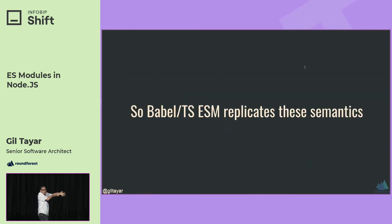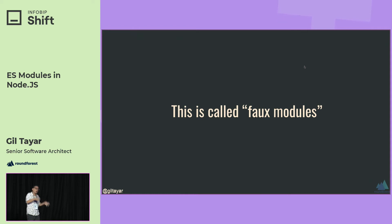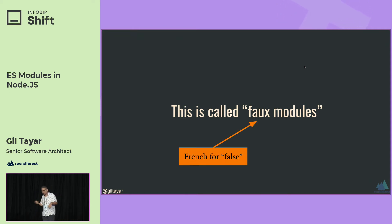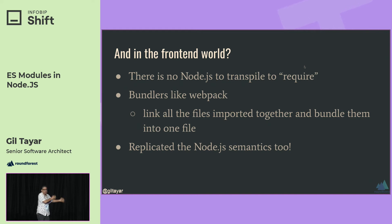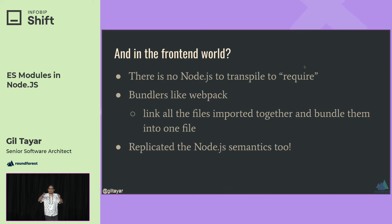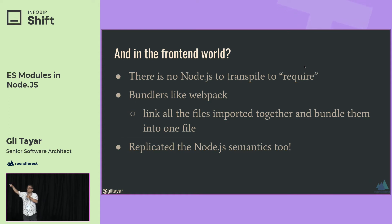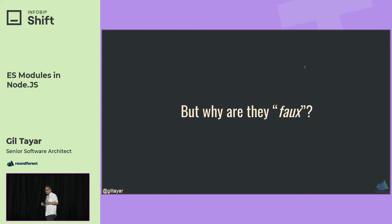Babel and TypeScript basically replicated those semantics of loading and importing a file. These semantics are now called faux modules — 'faux' is French for false. What about the front-end world? There's no require there. The front-end world uses bundlers like Webpack and Rollup, and they use the same semantics — when you're doing 'import from my-utils', it looks for that file in exactly the same order as Node.js does. They replicated the same semantics. Why are they called faux?